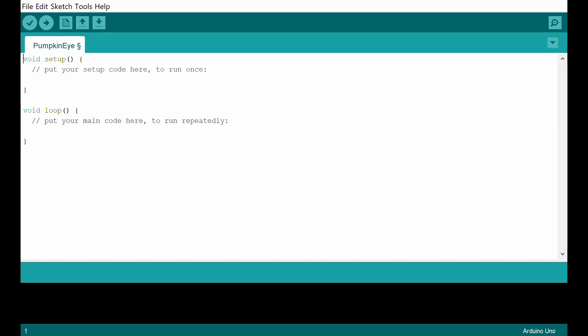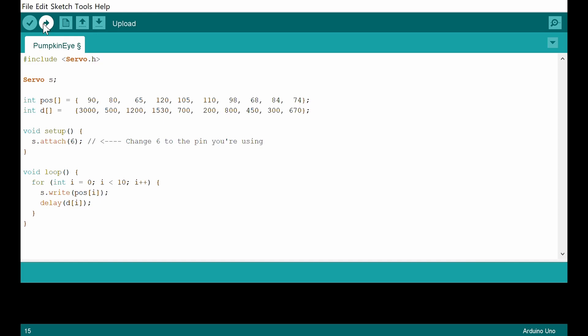The Arduino program is really simple. It just moves the servo to 10 fixed positions with some pre-programmed delays between each movement. I'll leave a link to the example code in the description below.